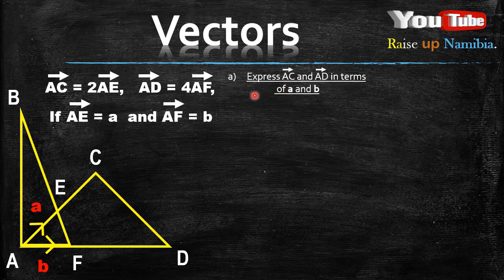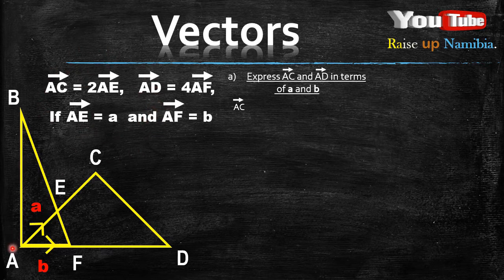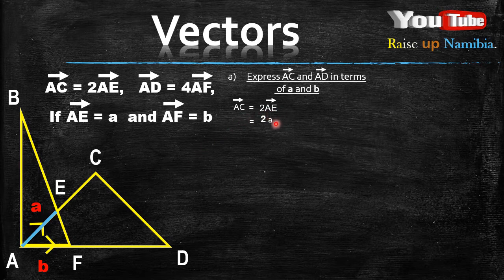Let's start with A: express AC and AD in terms of a and b. For AC — the line goes from here up. We are told AC is equal to 2AE. So we write AC equals 2AE, bring the 2 down the same way it is, and ask: what is AE? AE is this line from A to E, and that line is a. So you write a in place of AE — giving you 2a as the final answer for vector AC.